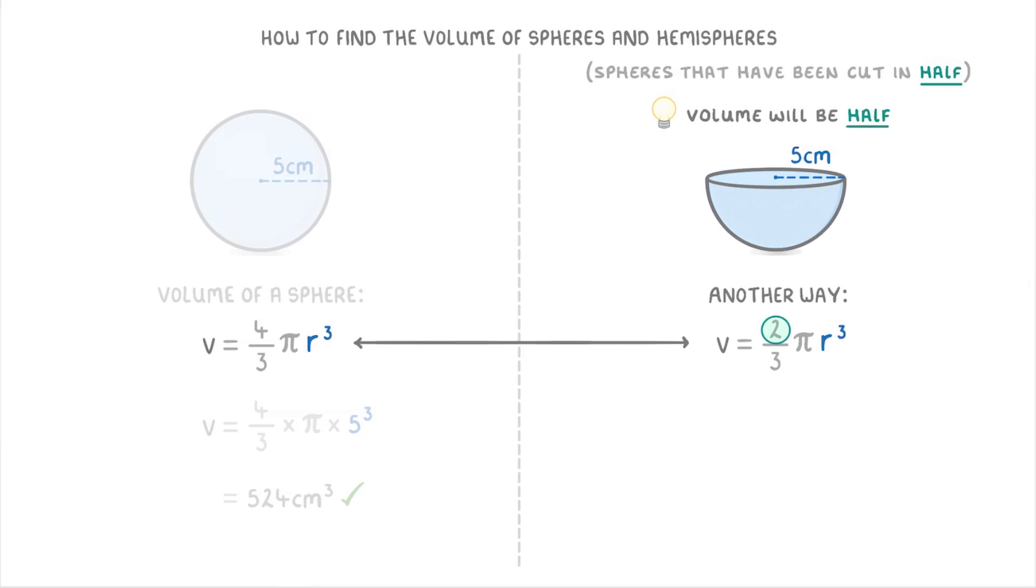And to show you that it works, for this hemisphere, we'd do 2 thirds times pi times 5 cubed, which would give us 262 centimeters cubed, which is exactly the same as we got before.